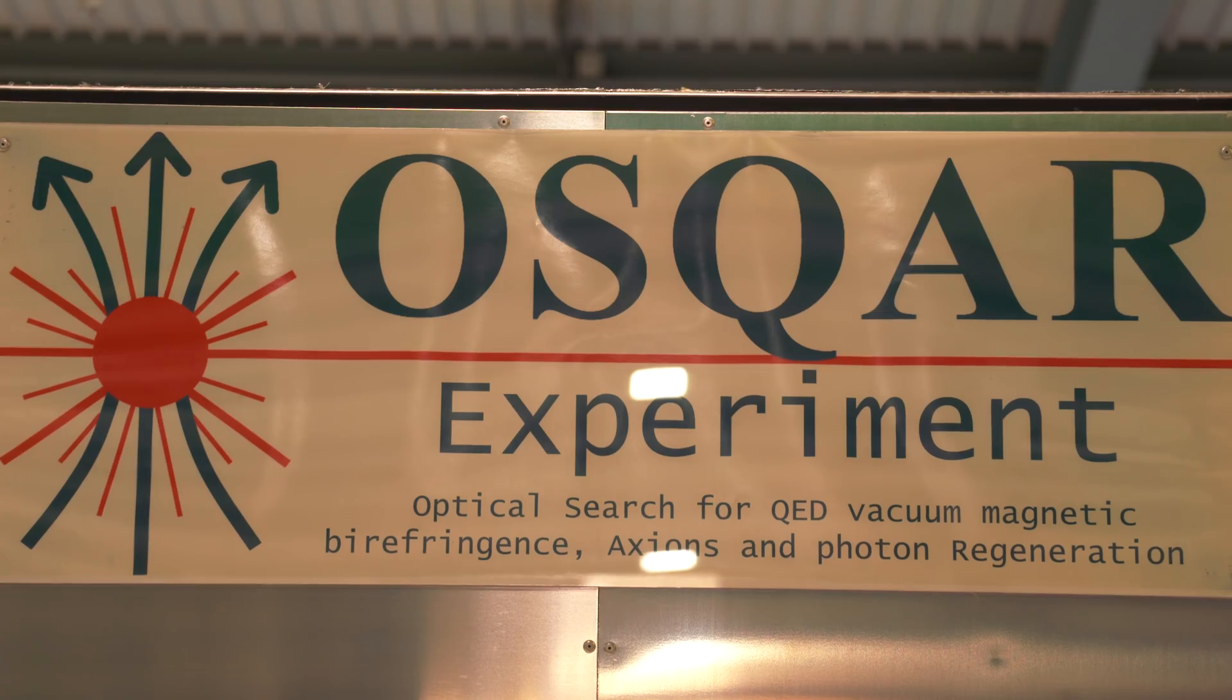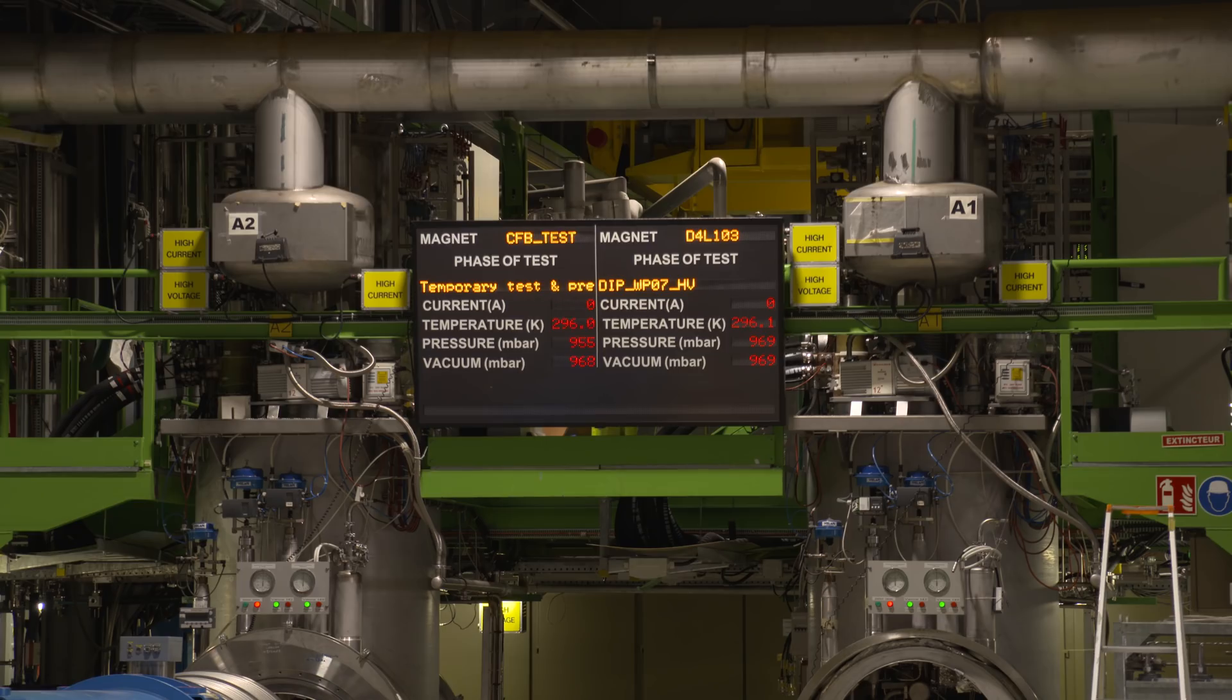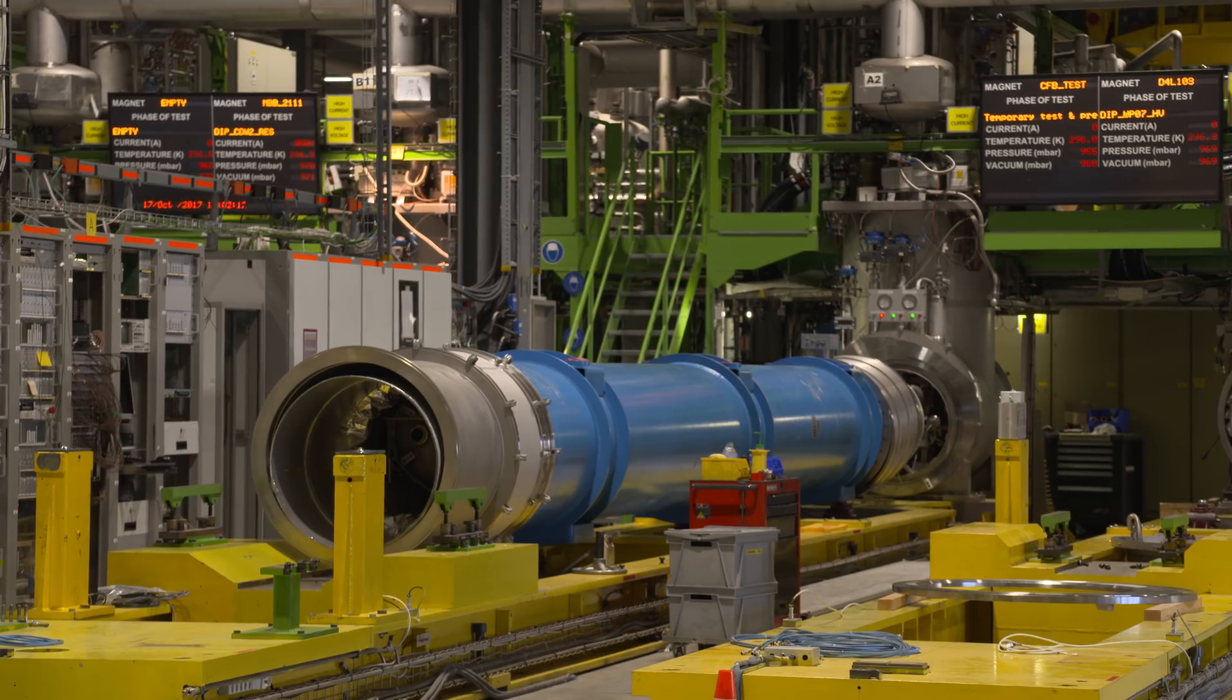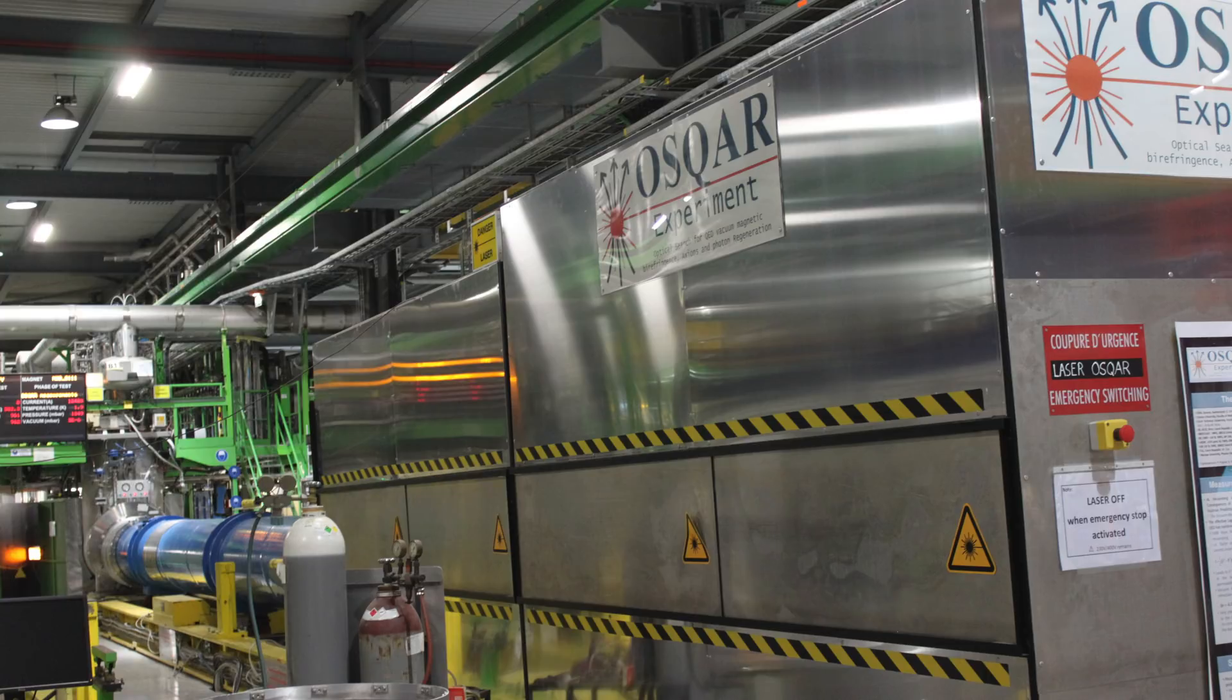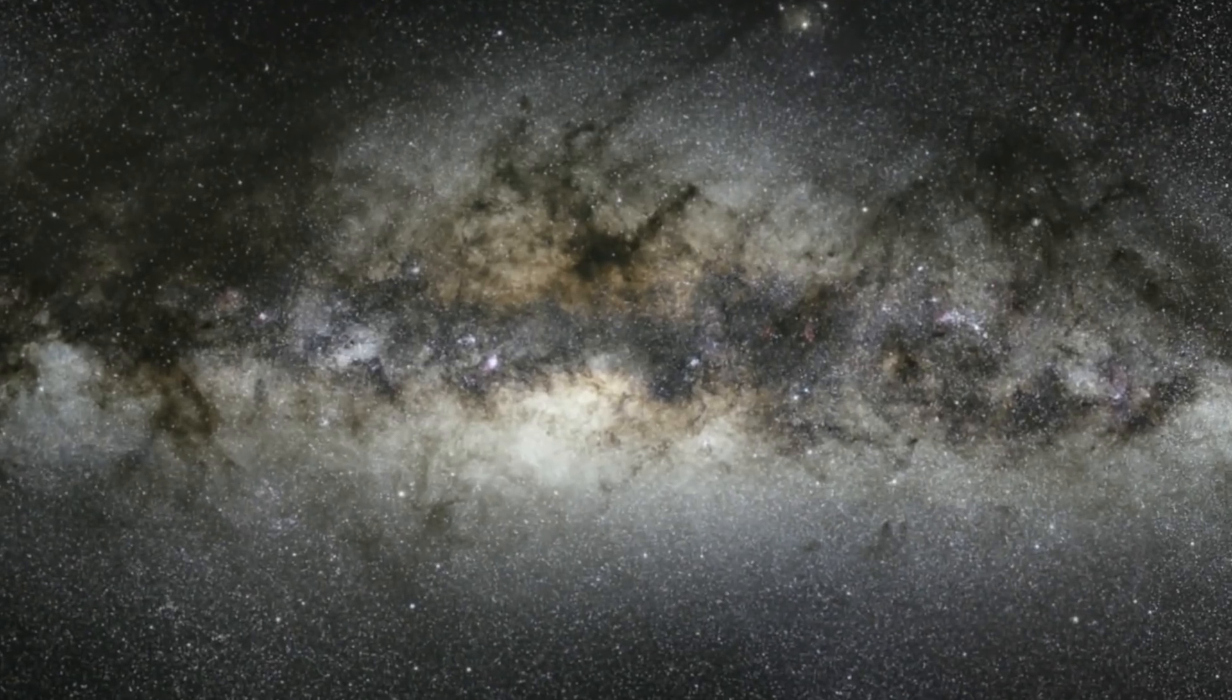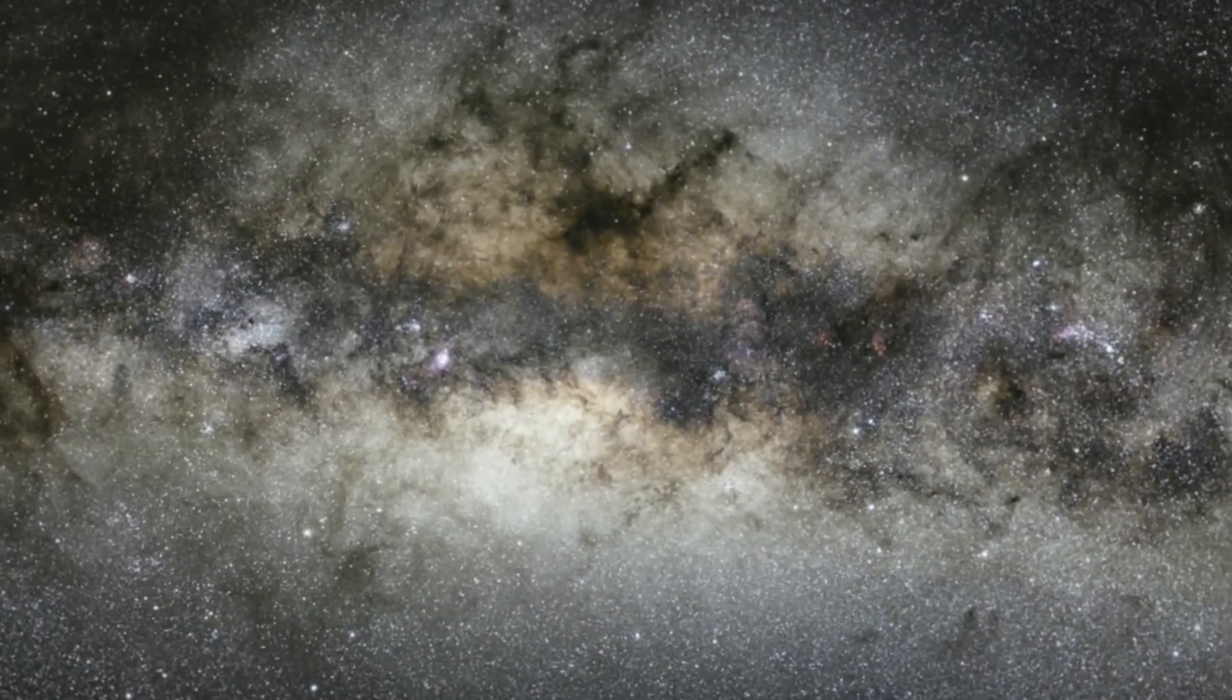The OSCAR experiment at CERN searches for hypothetical particles called axions and studies the properties of a vacuum. According to some theories, axions could be components of dark matter and they could help to explain why there is more matter than antimatter in the universe today.